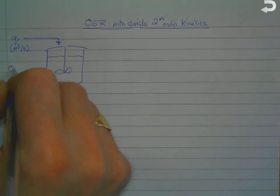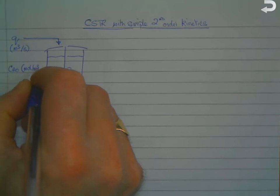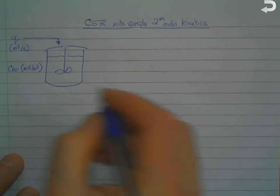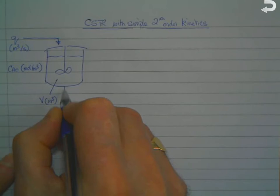We've got a starting component A which has a concentration of CA naught moles per cubic meter in the feed material. The reactor itself has a liquid volume of V cubic meters.